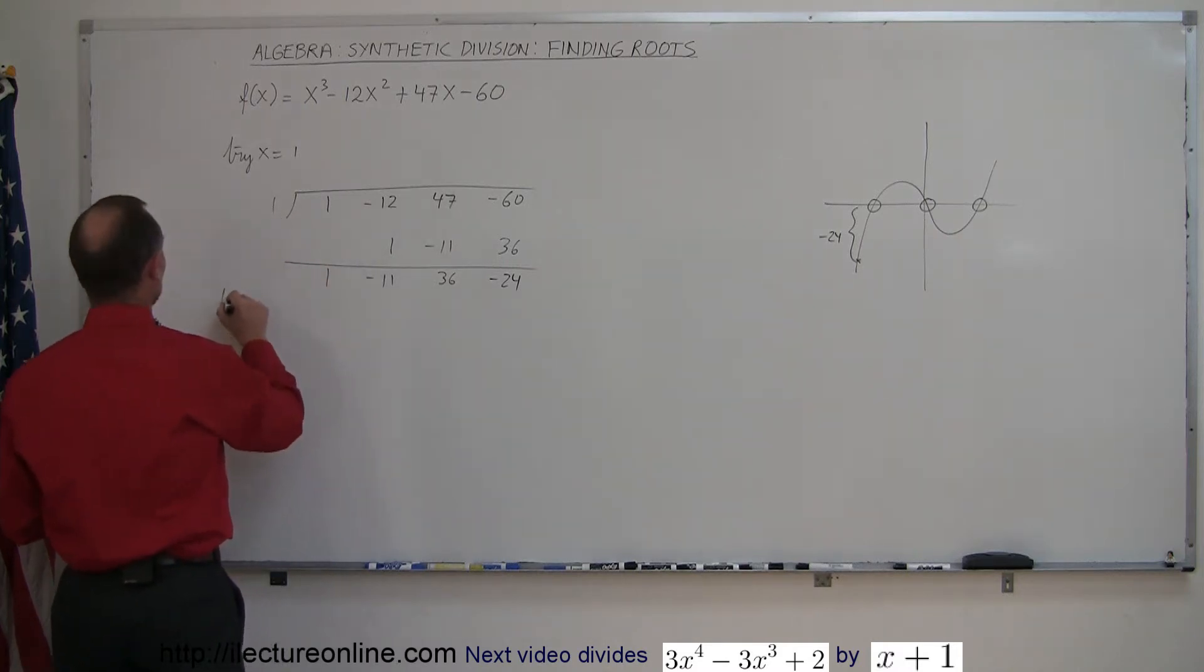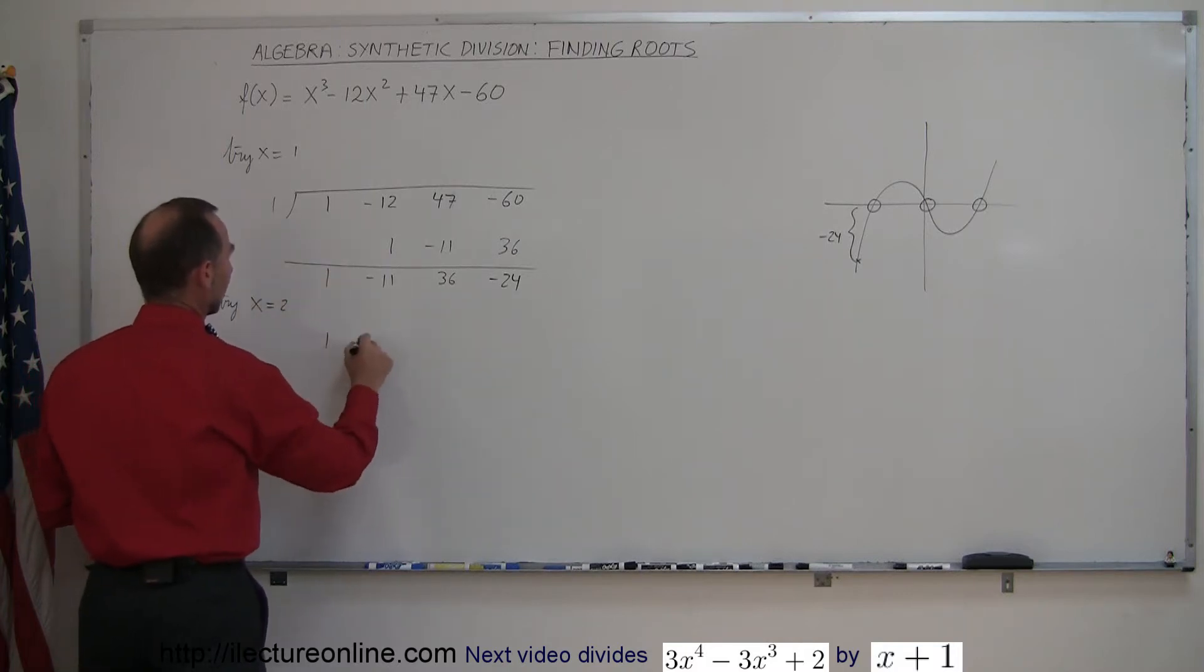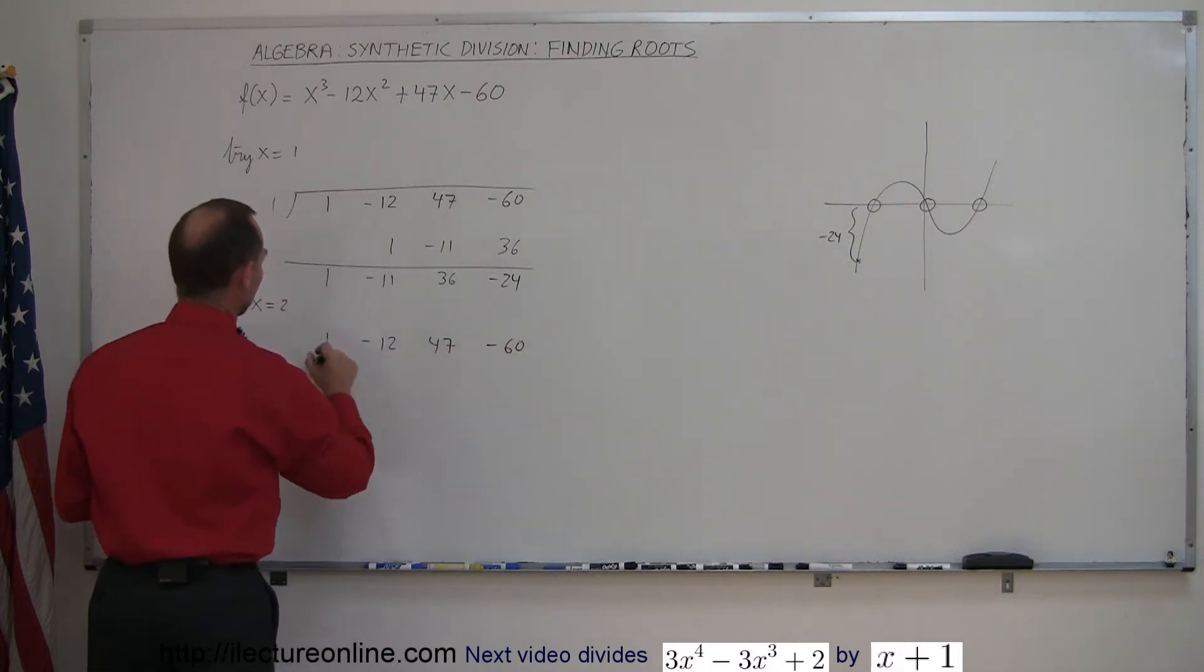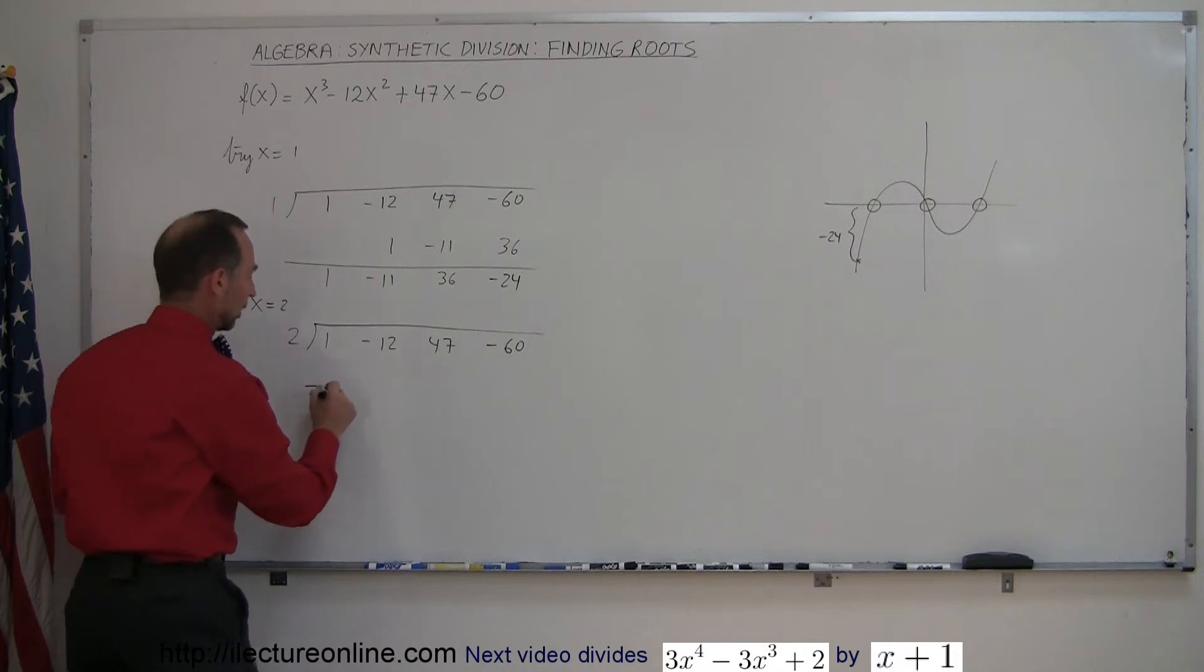Now we're going to try x equals 2. Again, we write down the coefficients: 1, negative 12, 47, and minus 60. Our division symbol, here's the presumed root, put the line down here.